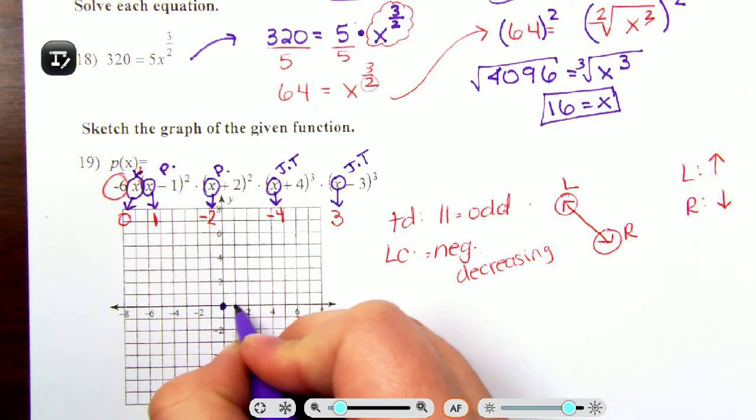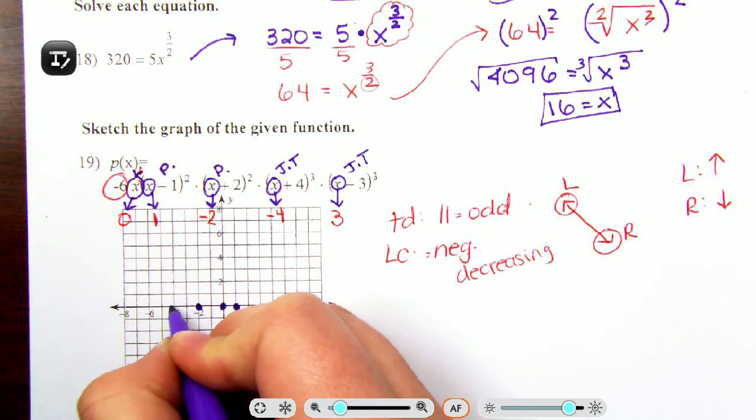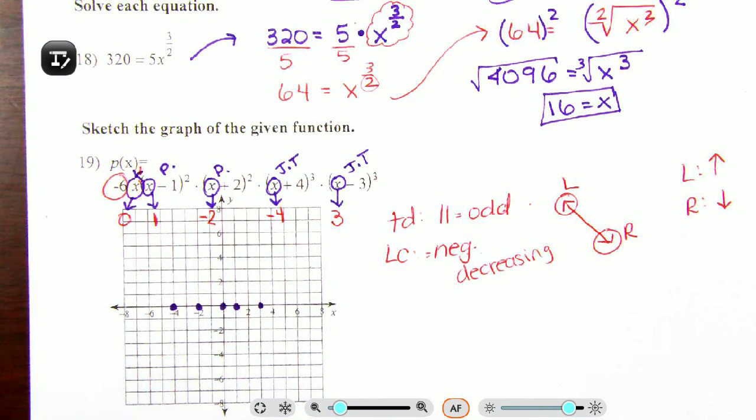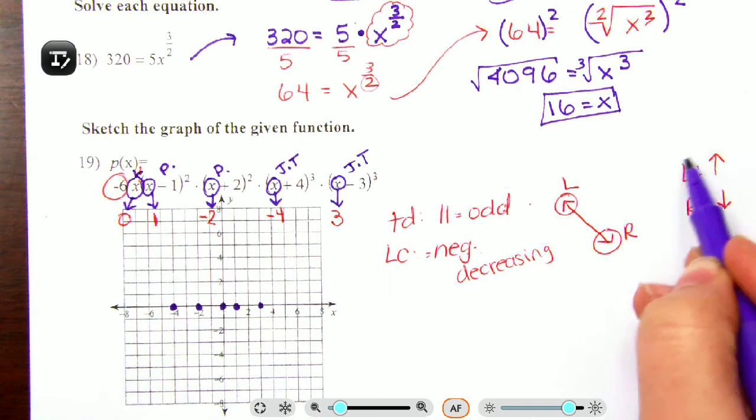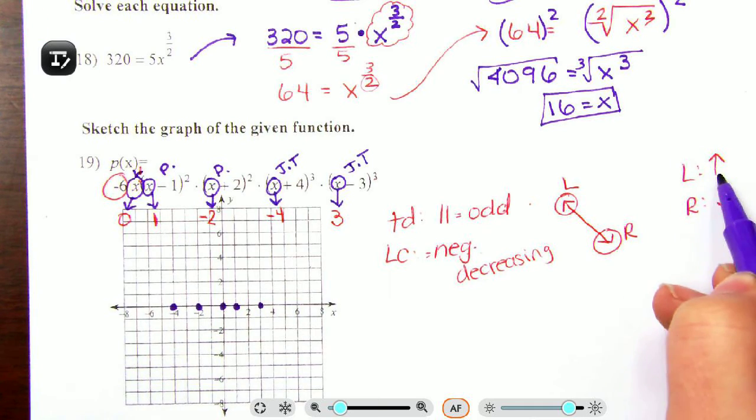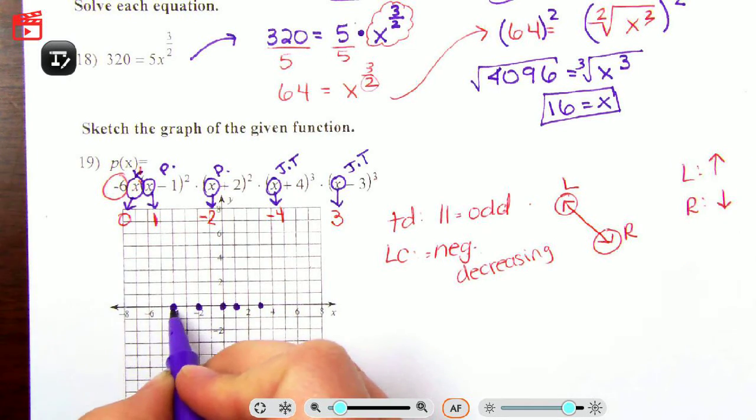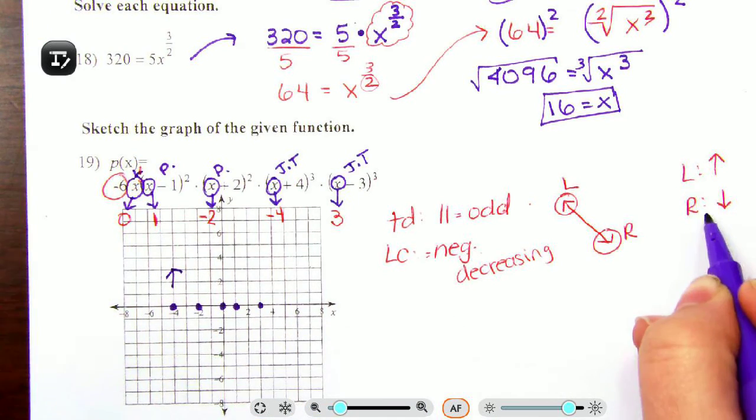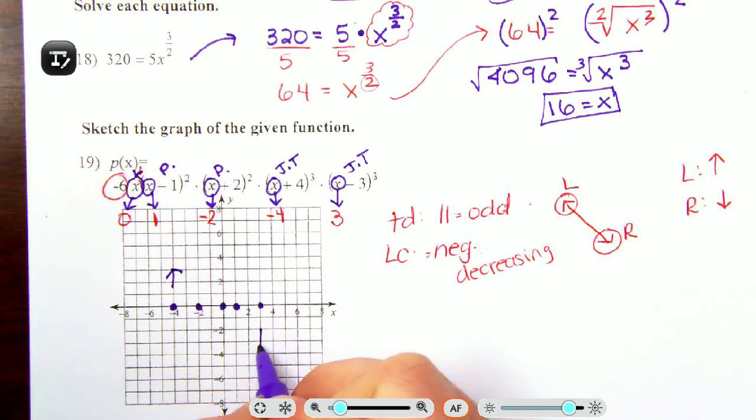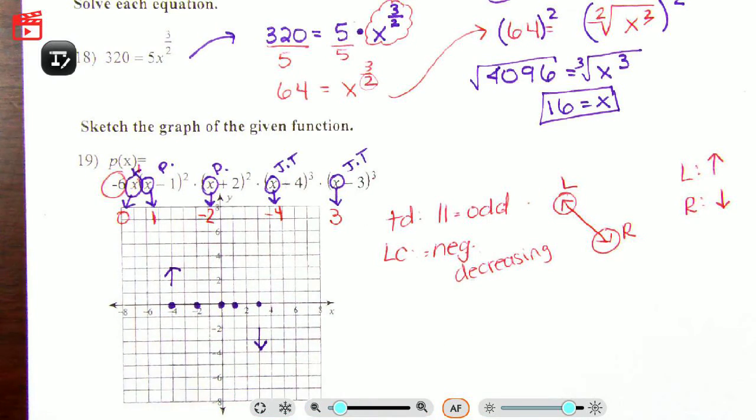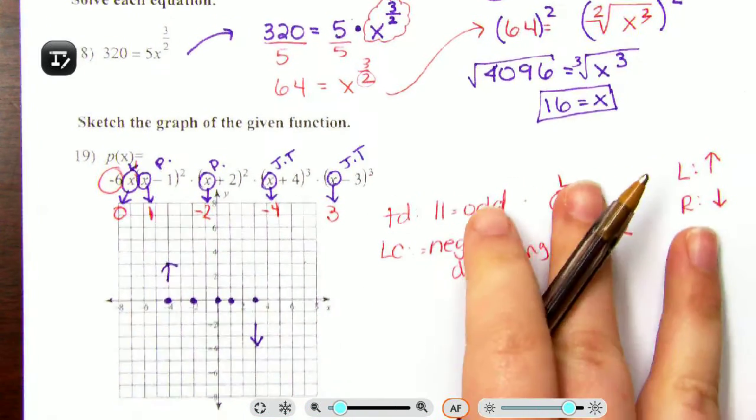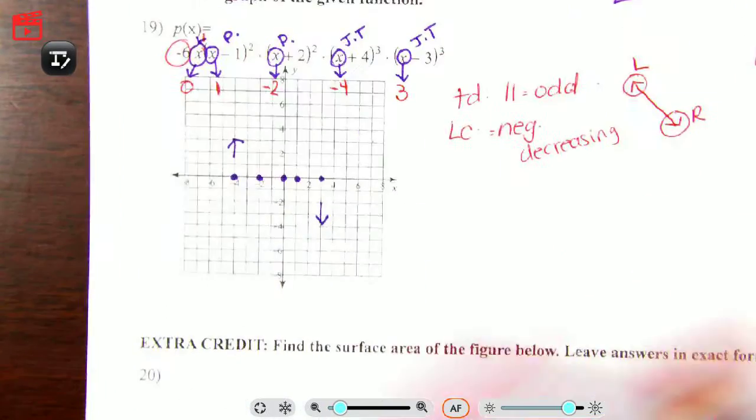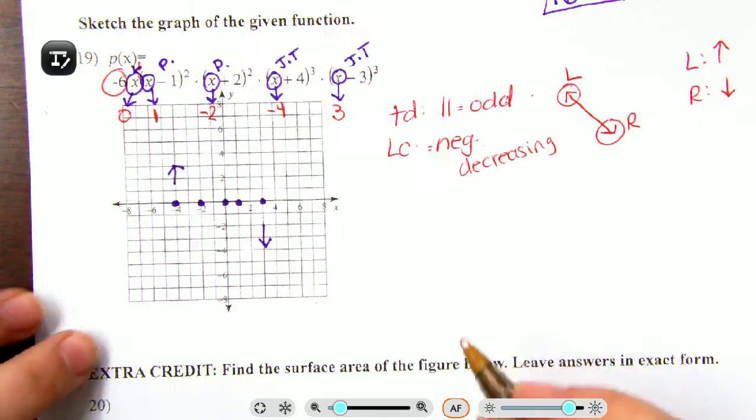Plot your points. So I have 0, 1, negative 2, negative 4, and 3. After that, for your left-hand side behavior, it's going up. So find your most left-hand point and do an up arrow. For your right-hand, find your most right-hand point, do a down arrow. Now we get to combine the middle and make sure that it is very smooth. It's very smooth, no sharp edges.